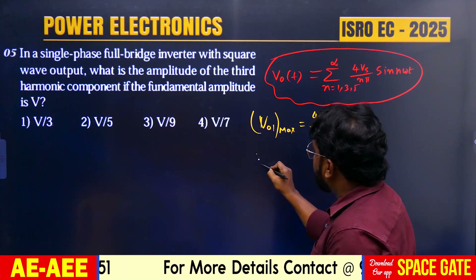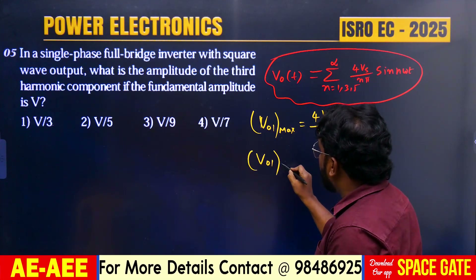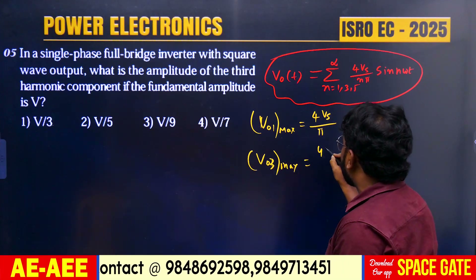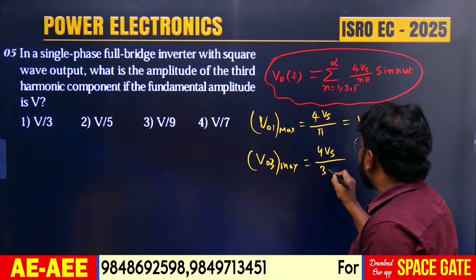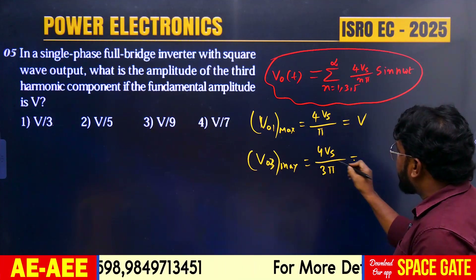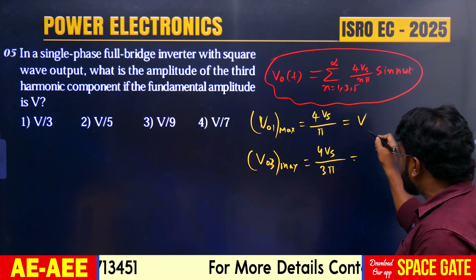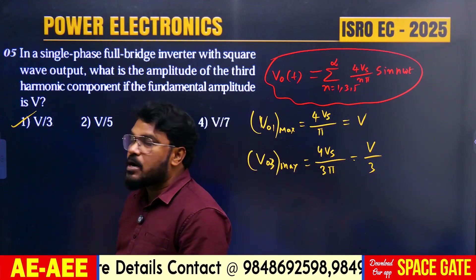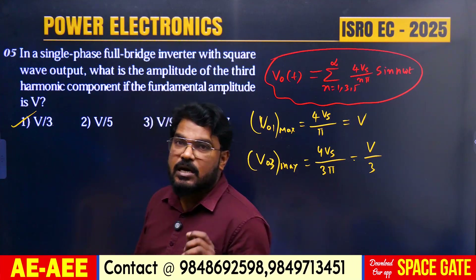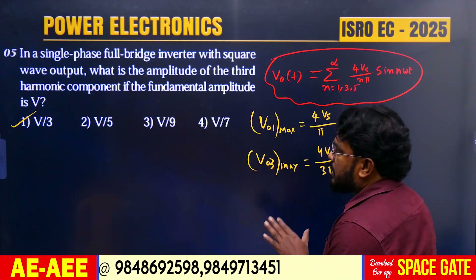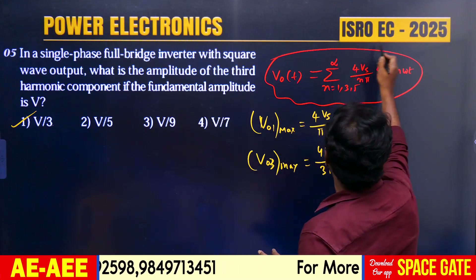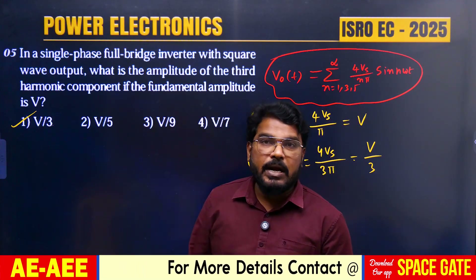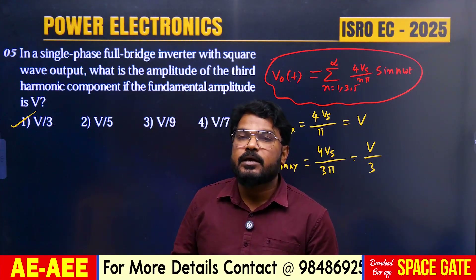The third harmonic amplitude V0_3_peak = 4Vs/(3π). Since 4Vs/π = V, we can write V0_3_peak = V/3. Therefore Option 1, V/3, is the correct answer. That concludes the discussion of 5 power electronics questions from ISRO EC 2025. I hope you got it — thank you very much.